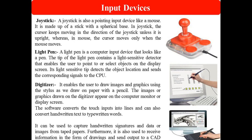The next input device is the joystick, which is used to give instructions to the computer — most joysticks are used for playing games. Next is the light pen, which is a light sensor detector that enables you to point or select objects on a display screen. Next is the digitizer, which enables users to draw images and graphics using a stylus, just as we draw on paper with a pencil. Whatever the person draws on the digitizer tablet using the pen is shown on the monitor.